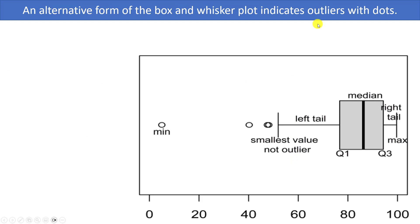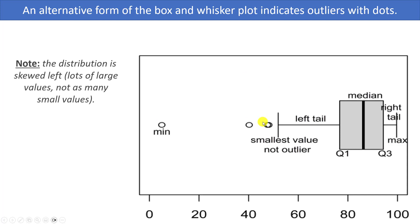An alternative form of the box and whisker plot indicates outliers with dots. In this version, the whiskers don't necessarily extend all the way to the max and minimum — they only go out to the smallest value that's not an outlier on each end, and the additional dots represent observations classified as outliers. In this example, we have more of a skewed left distribution, with values clumped toward the right and tailing off toward the left.